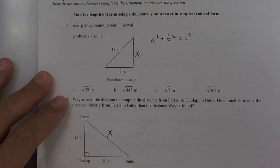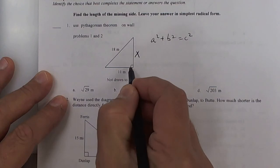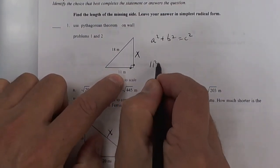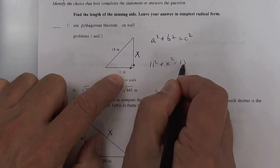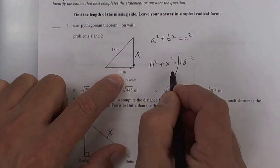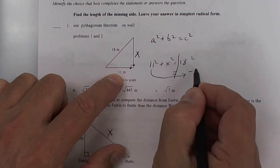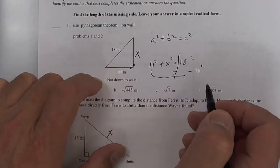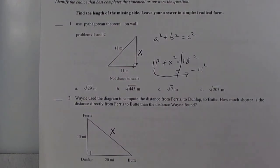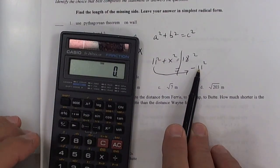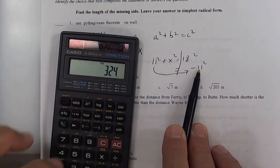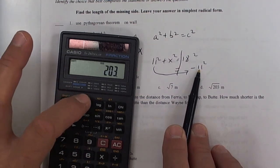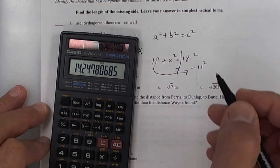All right, number one we did on the bellwork. Put an x right here, put your dots. So it's going to be 11 squared plus x squared equals 18 squared. You're going to subtract 11 squared from this, and then you're going to take the square root.